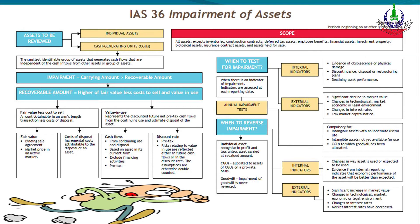When to reverse impairment: when indications reverse. If in the future indications reverse, we must reverse the impairment. For an individual asset, recognize the reversal in profit and loss, unless the asset is carried at revalued amount. For a CGU, the reversal is allocated to the assets of the CGU on a pro-rata basis. IAS 36 states that impairment of goodwill is never reversed. The reversal can be for an individual asset or group of assets with reference to CGU.